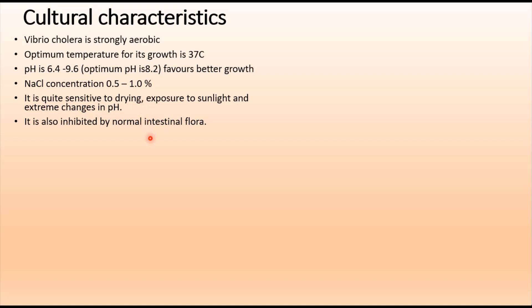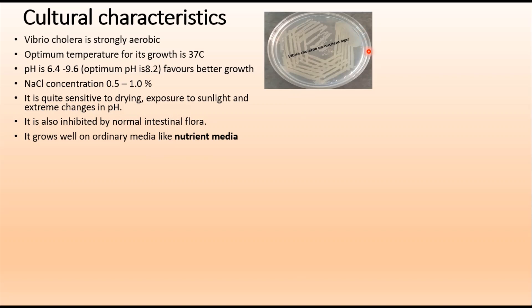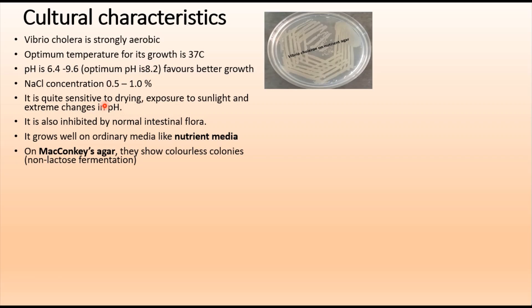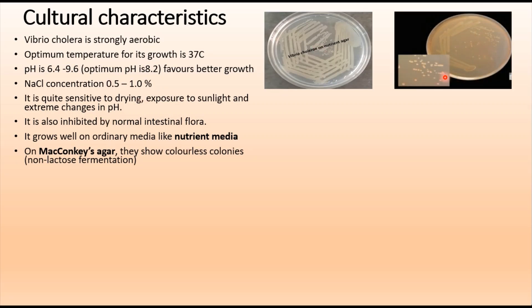Vibrio cholerae grows well on ordinary media like nutrient agar. After overnight growth, colonies appear moist, translucent, round and disc-shaped, measuring about 1.2 to 2 millimeters in diameter, with a bluish tinge in transmitted light. On MacConkey agar, colorless colonies appear since these are non-lactose fermenters, but on prolonged incubation, due to late fermentation of lactose, they can appear reddish on the medium.